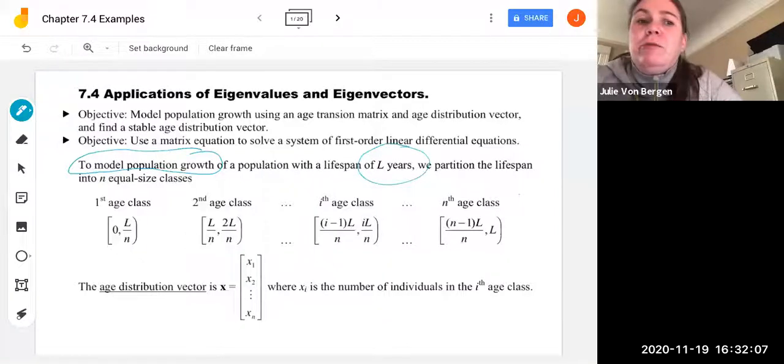So it could be five years, 10 years, one year, whatever age class you have. If you're talking about animals that have a short life you might use months.